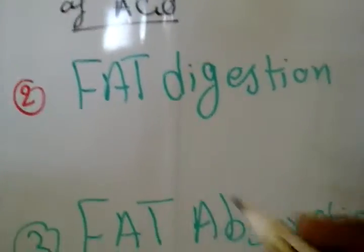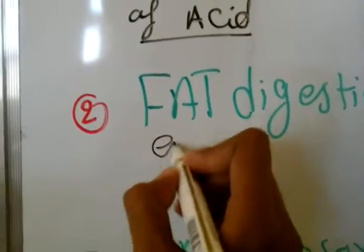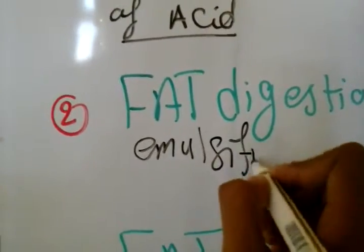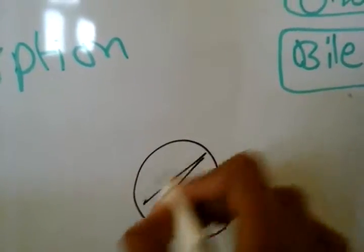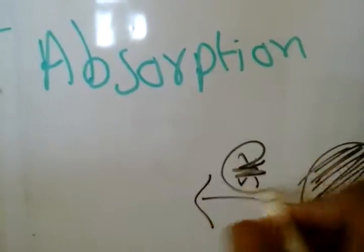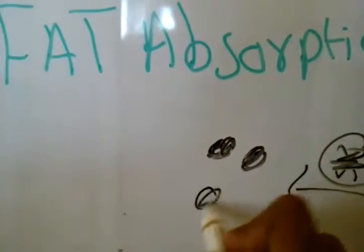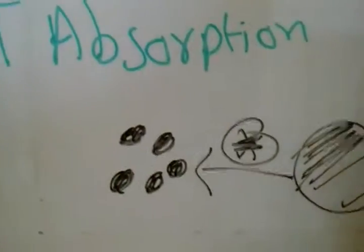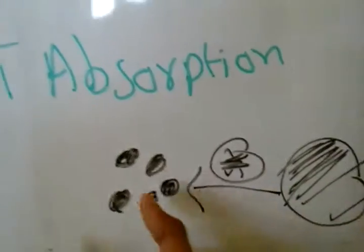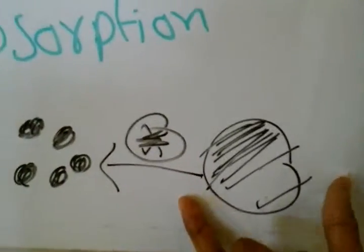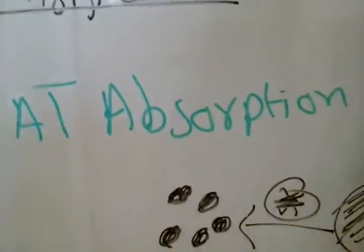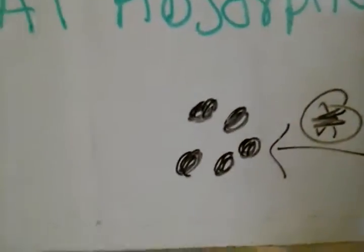Fat digestion is done by a process known as emulsification. Emulsification means taking a large droplet of fat and using bile to convert it into tiny, tiny, tiny molecules — breaking down this large molecule into smaller parts. This is fat digestion through emulsification of the fat droplet into small, smaller particles.